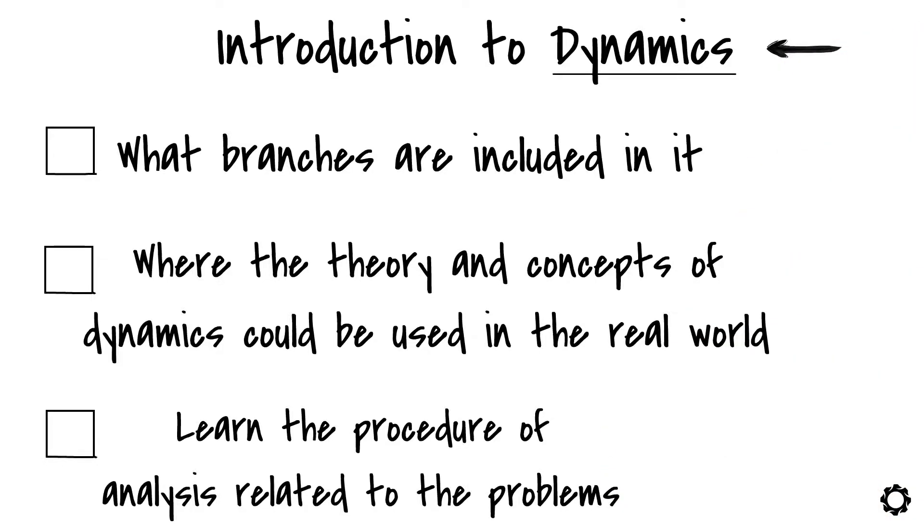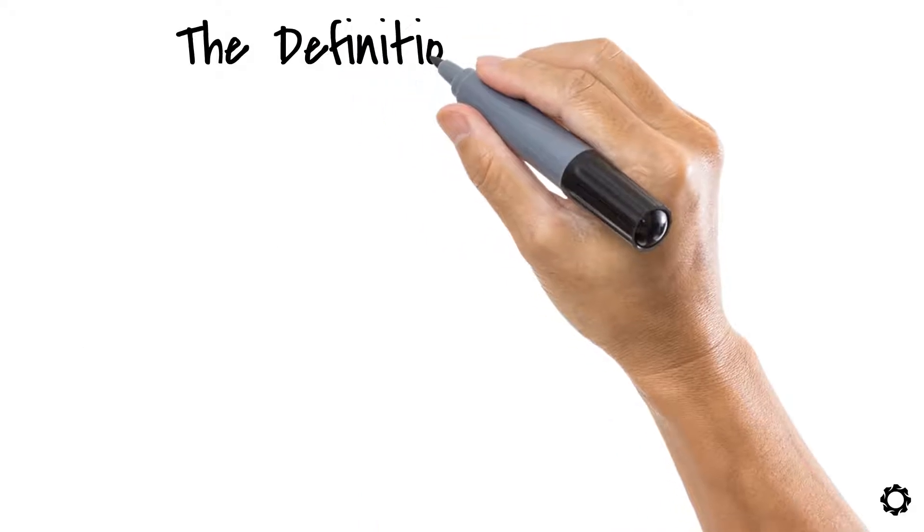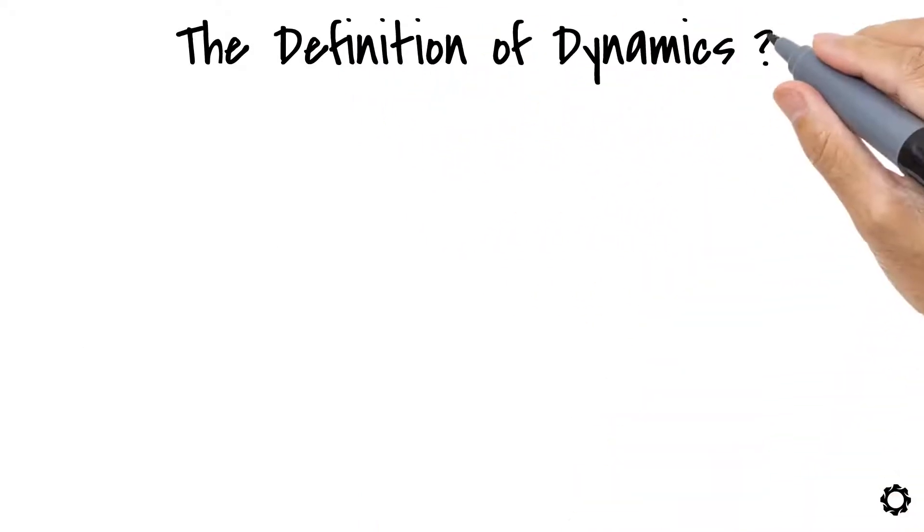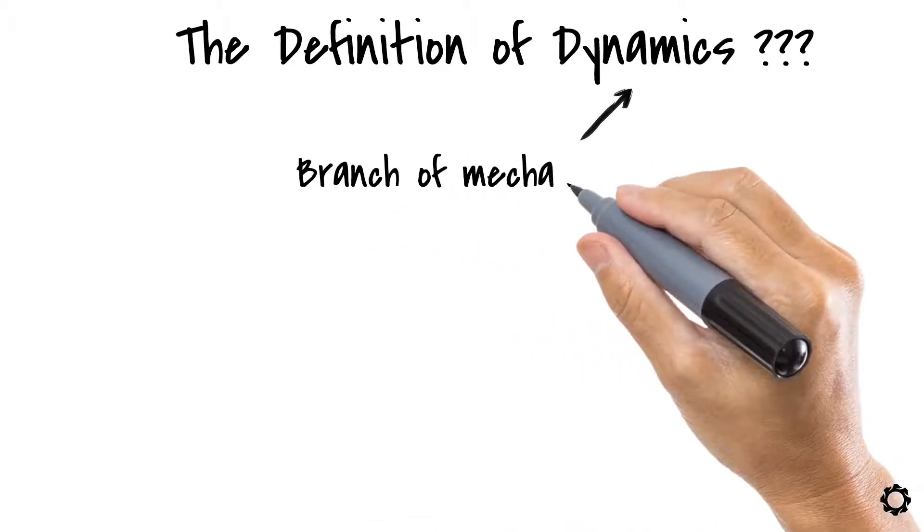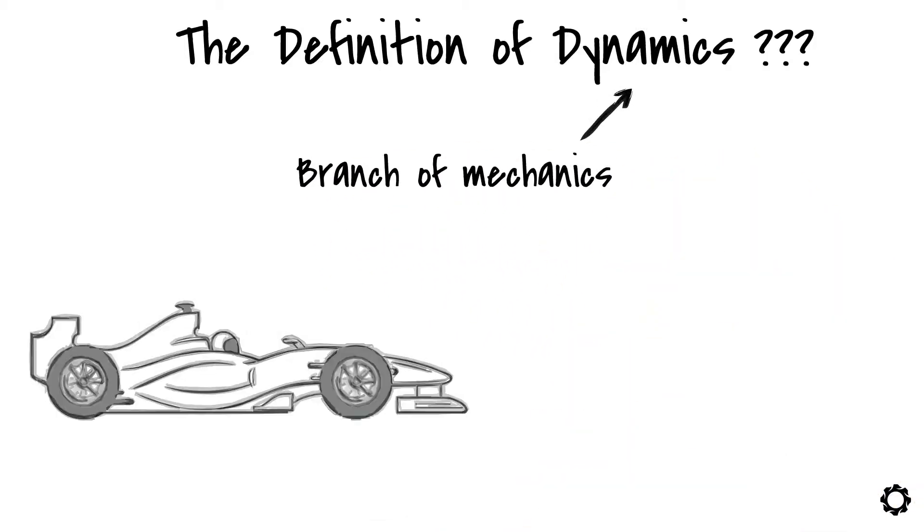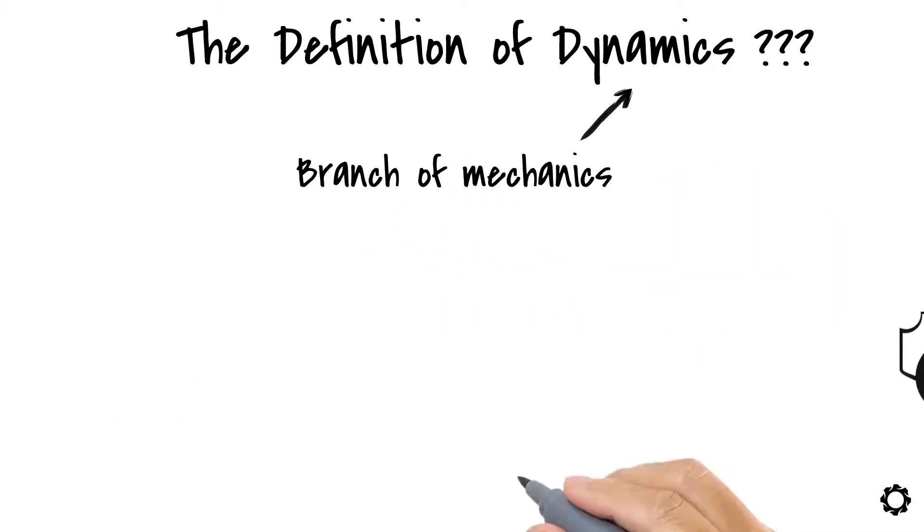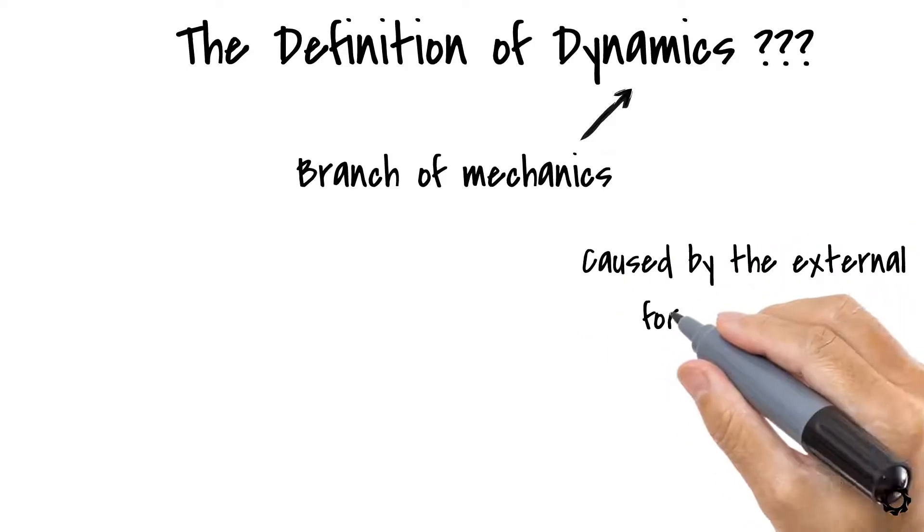The first thing that we need to know is the definition of dynamics. What is meant by dynamics? Well, dynamics is the branch of mechanics which studies objects which experience an acceleration that is caused by the external force or forces.